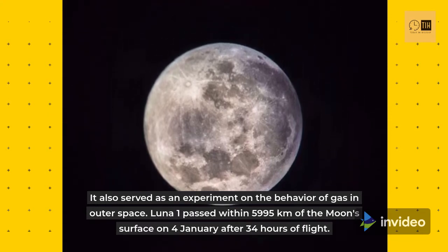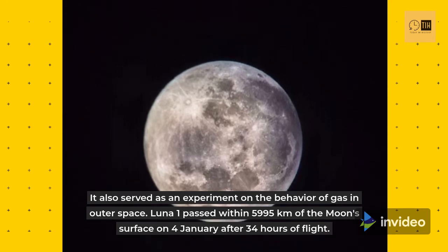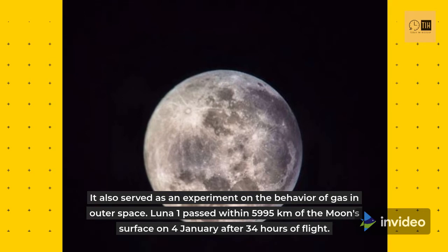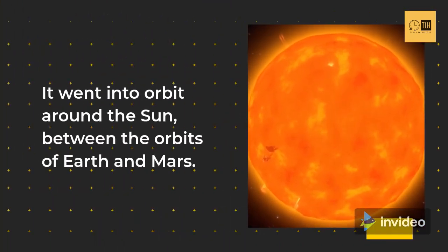Luna 1 passed within 5,995 km of the Moon's surface on January 4 after 34 hours of flight. It went into orbit around the Sun, between the orbits of Earth and Mars.